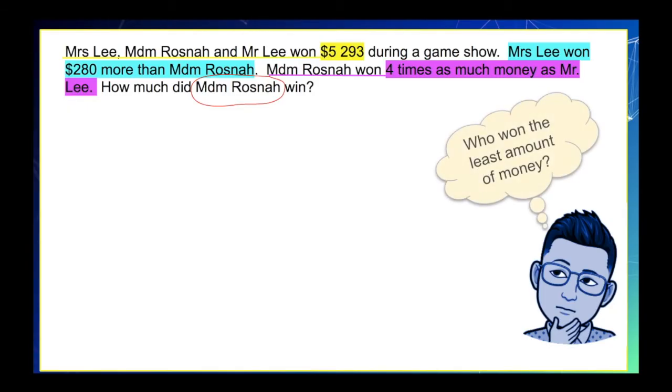First, let's ask ourselves, who won the least amount of money? By reading closely at the clues given in the problem, we can say that it was Mr. Lee who got the least amount of money, and this can be represented by drawing one unit like this.